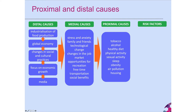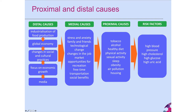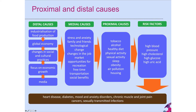The type of housing we live in is also an example of a proximal cause. These lead to risk factors such as high blood pressure, high cholesterol, high glucose in the blood, and high uric acid in the blood. These then lead to heart disease, diabetes, mood and anxiety disorders, chronic muscle and joint pain, cancers, and sexually transmitted infections. In epidemiology we need to look at all these various causes and not just think about the direct causes of disease such as proximal causes or risk factors.